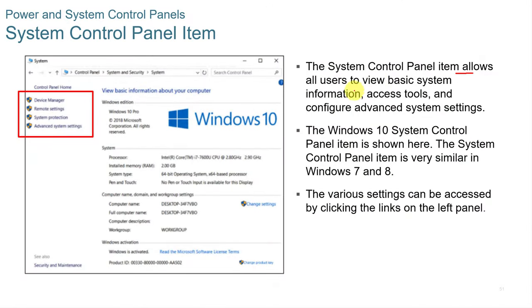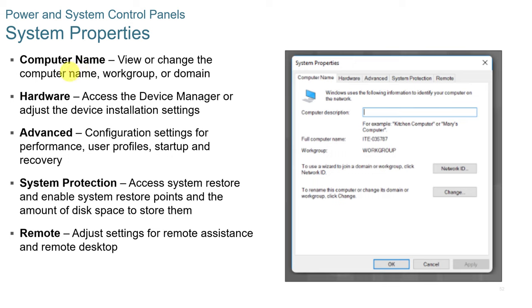The System control panel item allows all users to view basic system information, access tools, and configure advanced system settings. It is very similar across Windows 7, 8, and 10. Under System Properties, you can view or change the computer name, configure hardware, and access advanced settings for performance, user profiles, startup and recovery, system protection, and remote access.